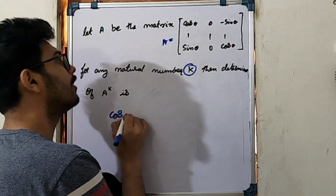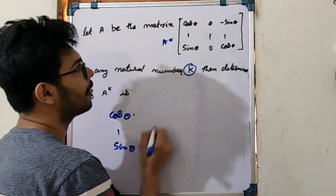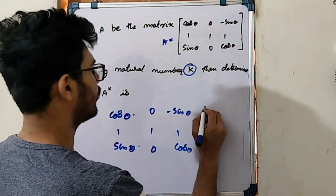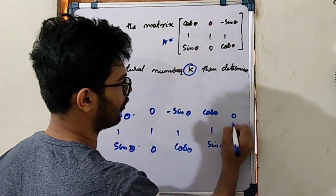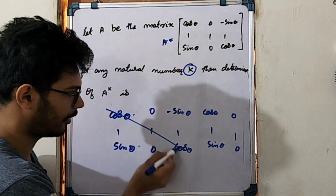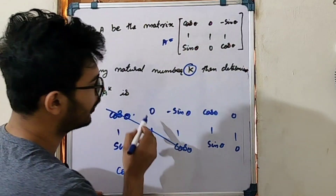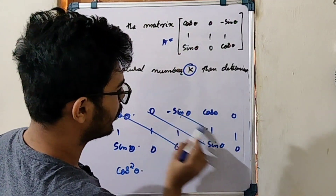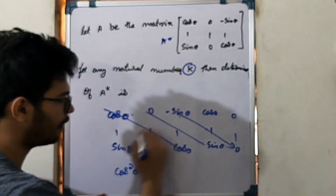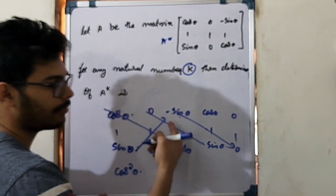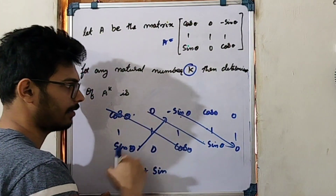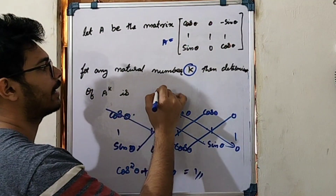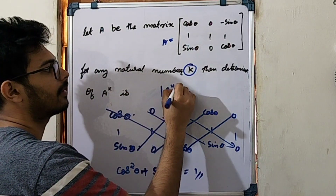We will answer this question using cos theta and sin theta. The matrix A has entries: cos theta, sin theta in one row, and 1 cos theta in another. We set up the determinant with cos theta, 0, sin theta; 0, 1, 0; minus sin theta, 0, cos theta. This is the determinant of A. Cross-multiplying, sin theta into 1 into sin theta minus 1. I get the determinant of A to the k, and 1 raised to k is 1.